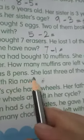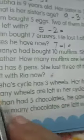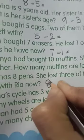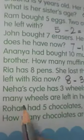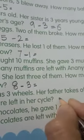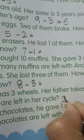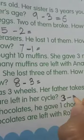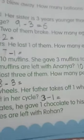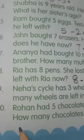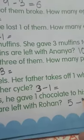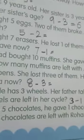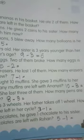Riya has eight pens and she lost three of them — how many pens are left with Riya? Neha's cycle has three wheels and her father takes off one wheel — how many wheels are left in her cycle? Rohan had five chocolates and he gave one chocolate to his sister — how many chocolates are left? Do this subtraction and find the difference.